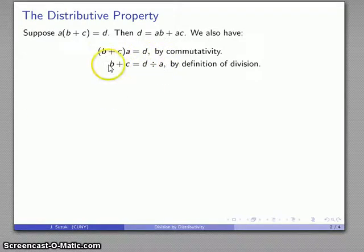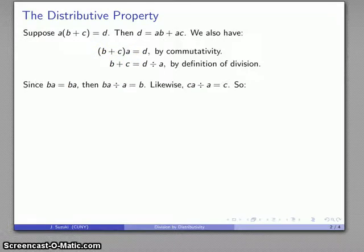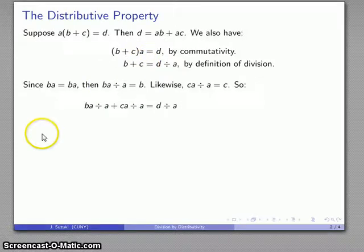Now, let's think about this. This b and this c are actually going to be rewritable in a certain way. By my definition of division, ba divided by a is going to be b. Likewise, ca divided by a is going to be c. And so these two sum ends over here can be rewritten as quotients: ba divided by a, ca divided by a, and that's still my quotient d divided by a. And here's the important thing, which is that we know that d is ab plus ac.